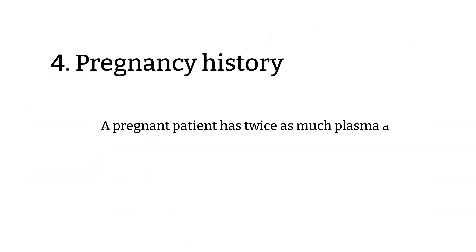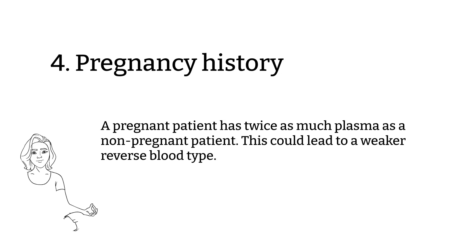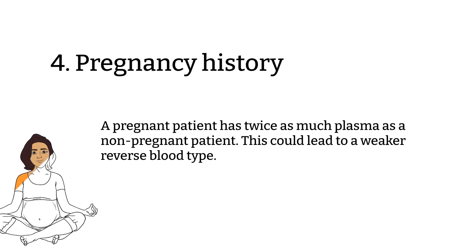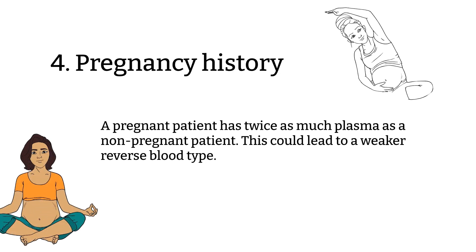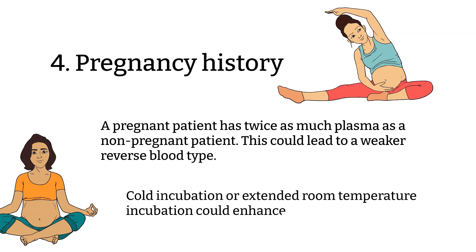Pregnancy history is another factor. A pregnant patient has twice as much plasma as a non-pregnant patient, meaning antibody concentrations could be diluted and the reverse type may be weakened. To troubleshoot this, you could enhance the reverse type by performing co-incubations, extending room temperature incubations, or adding more plasma or serum when performing the test.